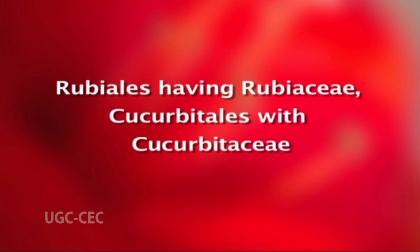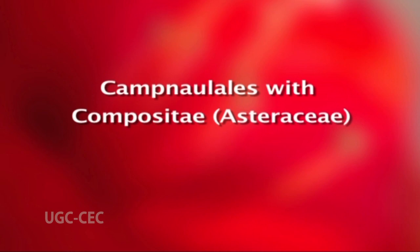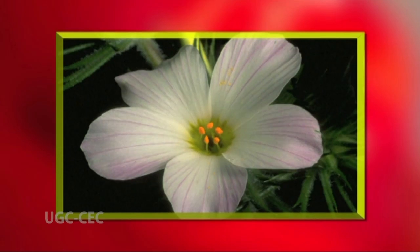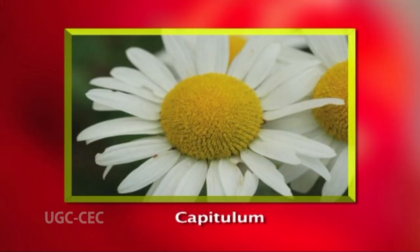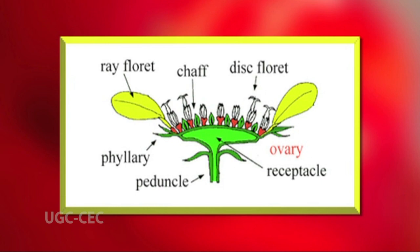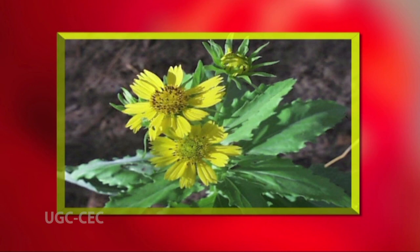Rubiales with Rubiaceae, Cucurbitales with Cucurbitaceae, and Campanulales with Compositae are placed at the end, as they have epigynous families. Cucurbitaceae, placed in Polypetali by Bentham and Hooker, is placed in Sympetalae on account of its gamopetalous corolla, overlooking its relationship with Passifloraceae. The placing of Compositae at the end of Sympetalae is justified on account of several advanced features such as the capitulum, zygomorphy of ray florets, unisexuality of ray florets, adaptation of pollination, and excellent means of dispersal of fruits.